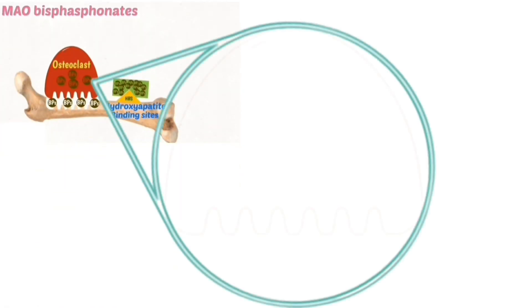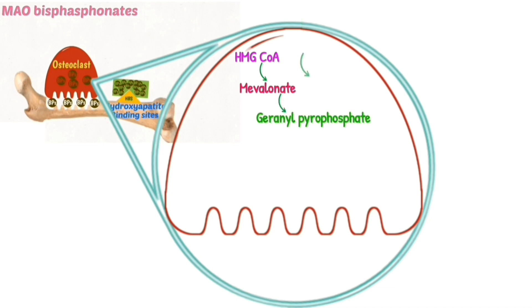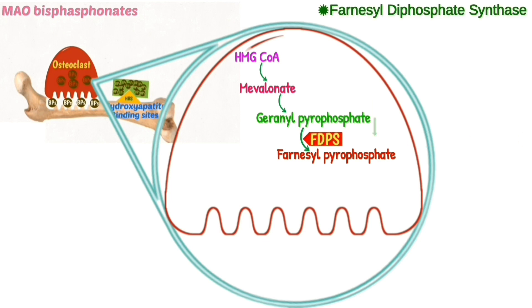Normally, what happens to osteoclasts: HMG-CoA is converted into mevalonate, mevalonate is converted into geranyl pyrophosphate, and geranyl pyrophosphate is converted into farnesyl pyrophosphate with the help of the enzyme FDPS.